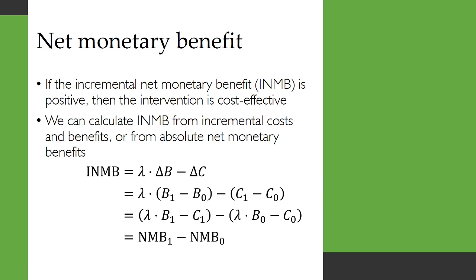If the incremental net monetary benefit, or INMB, is positive, then the intervention is cost-effective. We can calculate the INMB from incremental costs and benefits, or from absolute net monetary benefits. The change in benefits is just B1 minus B0; the change in costs is just C1 minus C0. We can then rearrange this to get the net monetary benefit of intervention one minus the net monetary benefit of intervention zero — using absolute benefits and absolute costs rather than relative ones.